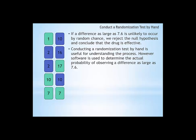So conducting a randomization test by hand is useful for understanding the process. However, three tests certainly is not enough to see if it's very likely. We'd probably want to do this a thousand or ten thousand times. So we're going to use software to actually calculate how likely it is that if we just do this randomization process, how often would we observe a difference as large or larger than 7.6.